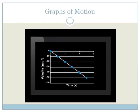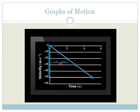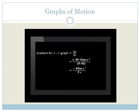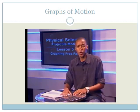We can calculate the gradient from any triangle drawn on the graph. For example, we can use the biggest triangle shown here. Delta v is minus 49 minus 0. Delta t is 5 minus 0. Including units, this is minus 49 meters per second divided by 5 seconds. This equals minus 9.8 meters per second squared. In other words, 9.8 meters per second squared downward. This is the acceleration of the ball.